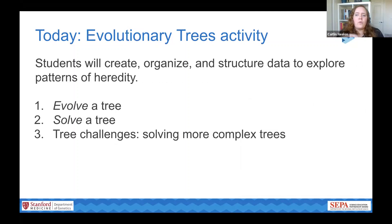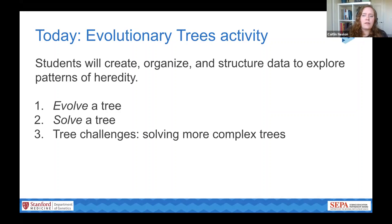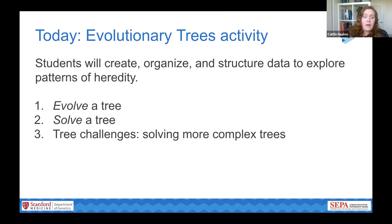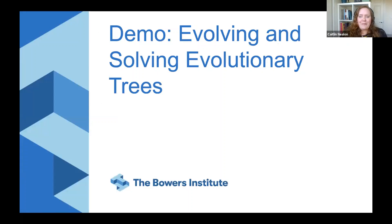This activity allows your students to apply these concepts while also exploring patterns of data creation and organization. Students organize species into phylogenetic trees to determine how those species evolved. The activity has three main parts: first, evolving your tree — students create an evolutionary tree by introducing mutations in a population of animals across progressive generations; then solving a tree — you swap your final species with another group and use the data to solve a tree using just what you can observe; and finally, tree challenges, which are more complex puzzles for students to solve at their own pace.